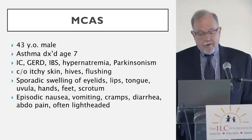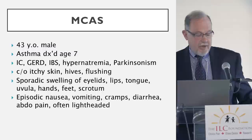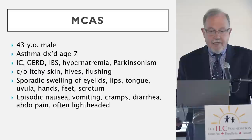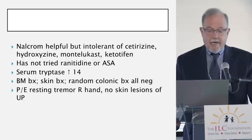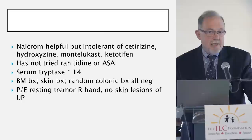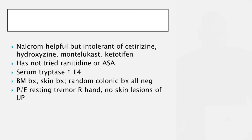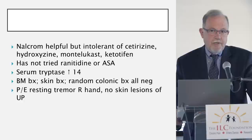They have a background of asthma, some acid reflux, and a variety of other things. They come with itchy skin, hives, flushing, some swelling, nausea, vomiting, cramps, diarrhea, and lightheadedness — all legitimate symptoms attributable to mast cell activation. They tried cromolyn, and it was helpful, but they didn't get on well with some of the other medications tried. The serum tryptase level was increased — the upper limit of normal is 11.4 and they were at 14. Bone marrow biopsy, skin biopsy, and colonic biopsies were all negative.